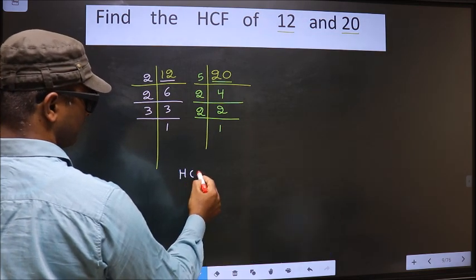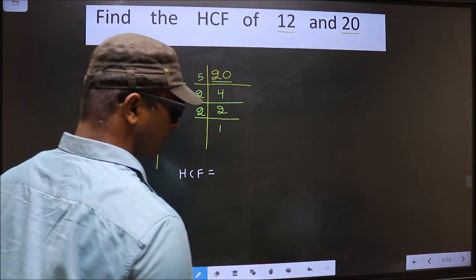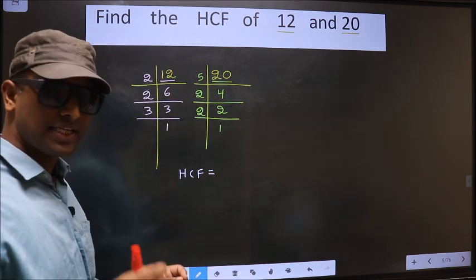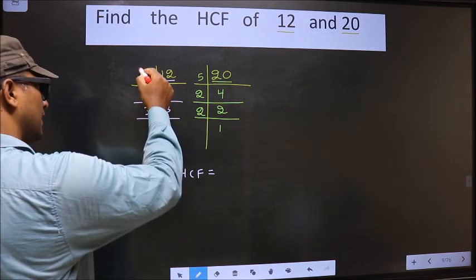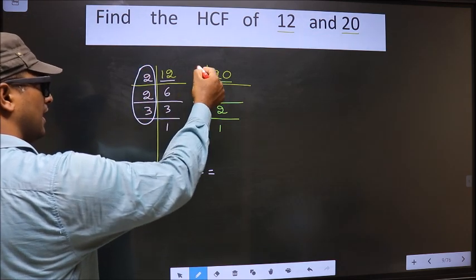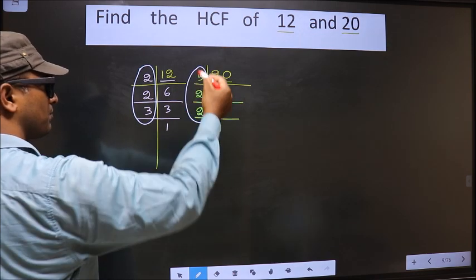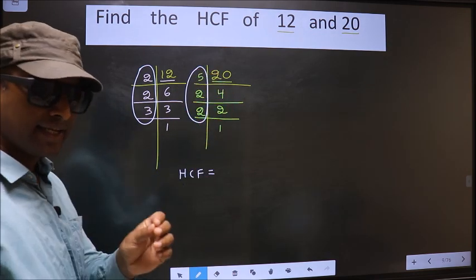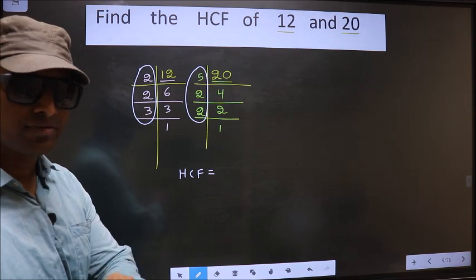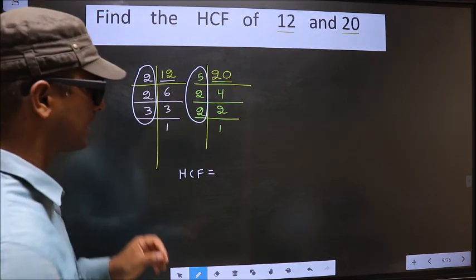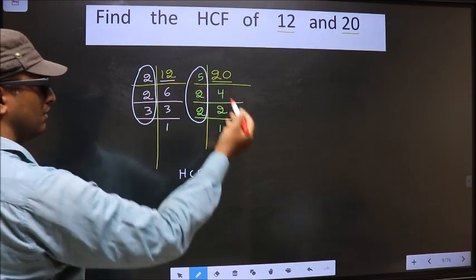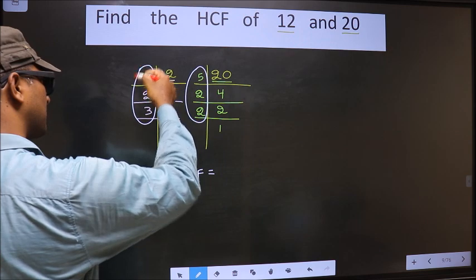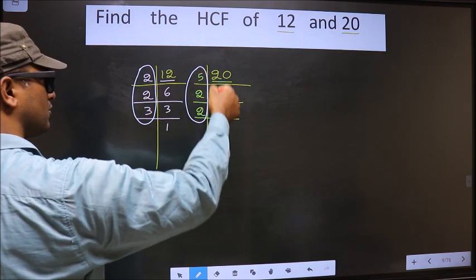Now our HCF is, HCF is the product of numbers which should be present here and also here. I repeat, HCF is the product of numbers which should be present in these 2 places.